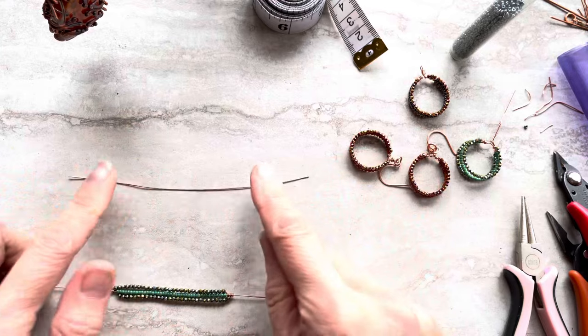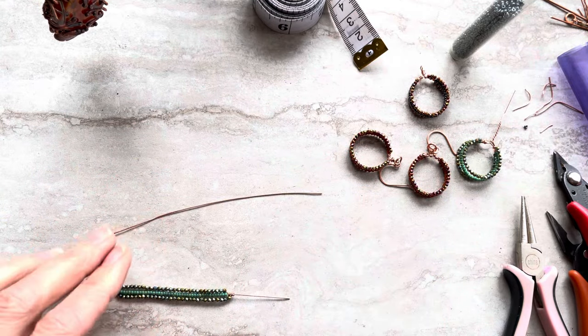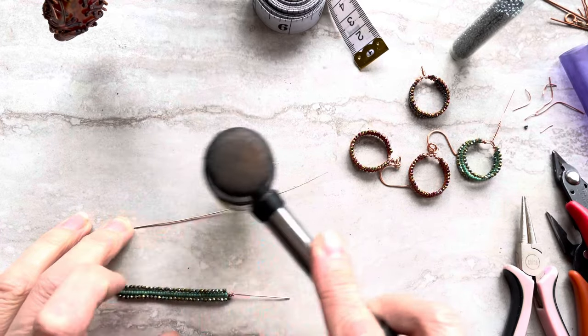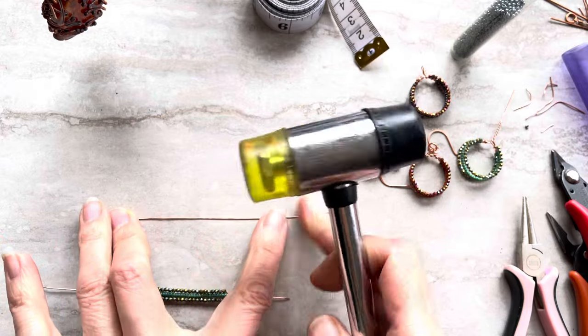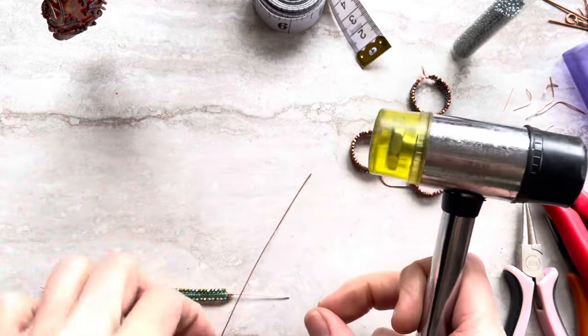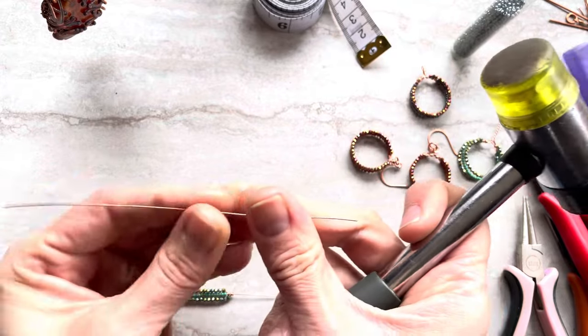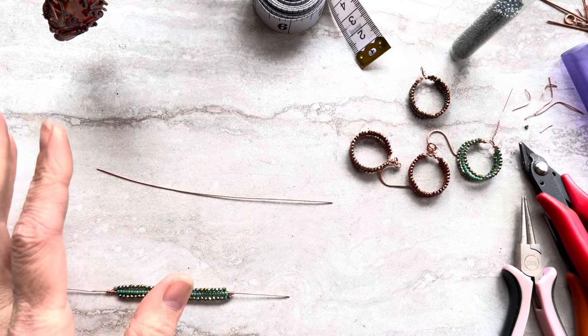And I will hammer only this part, from here to here, so we just keep hammering from here to here several times. You will feel it when the wire is really stiff and feels like it's perfect for creating earrings. You will start doing them.